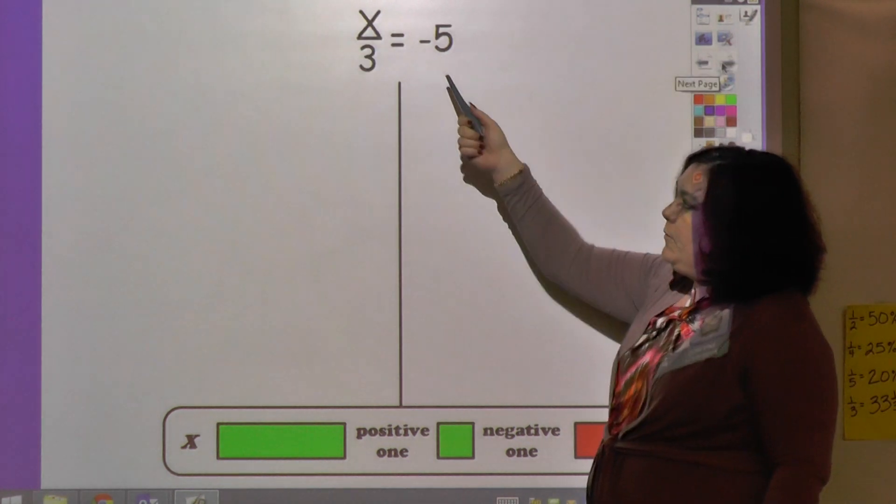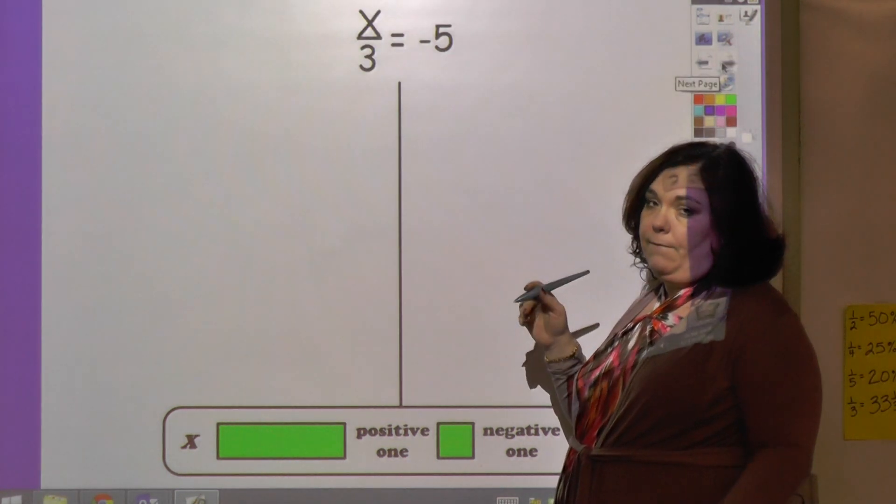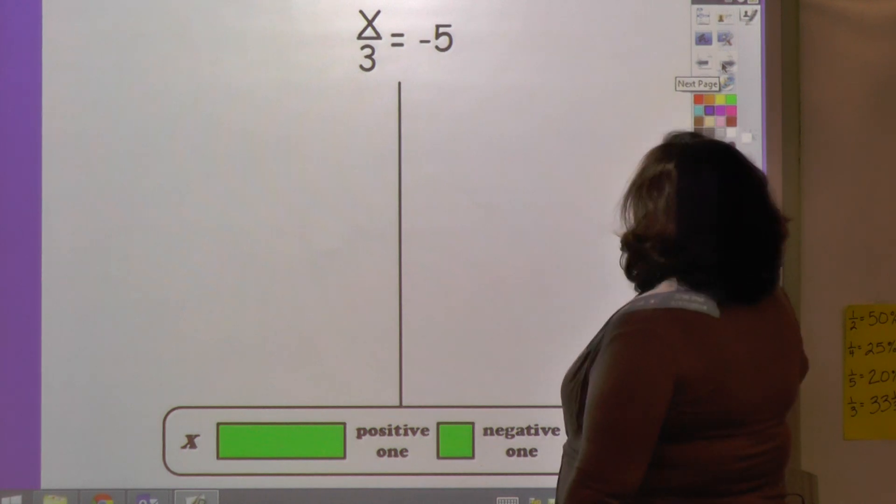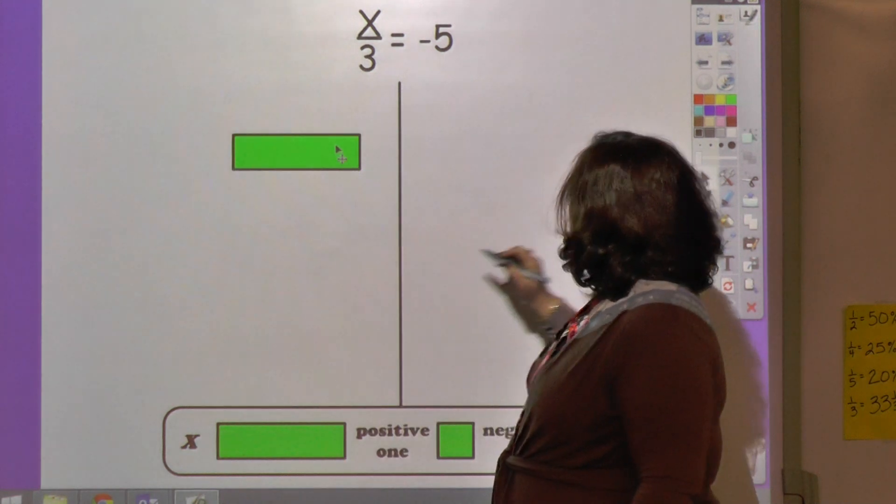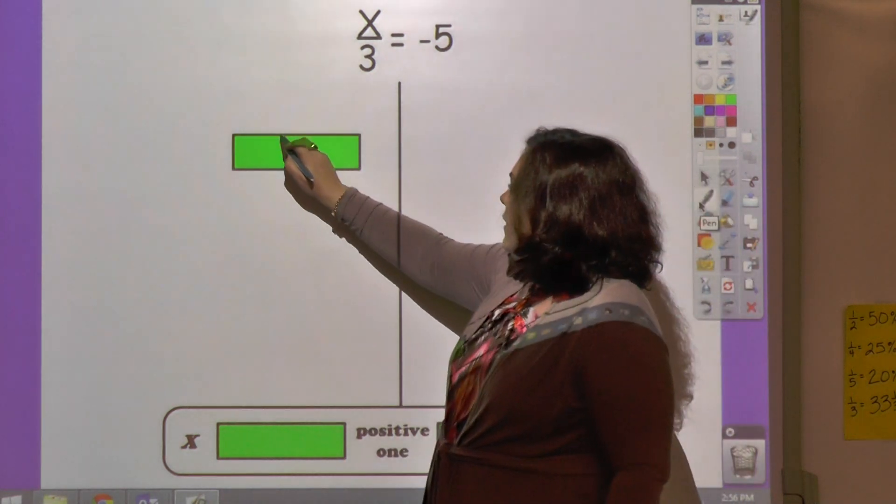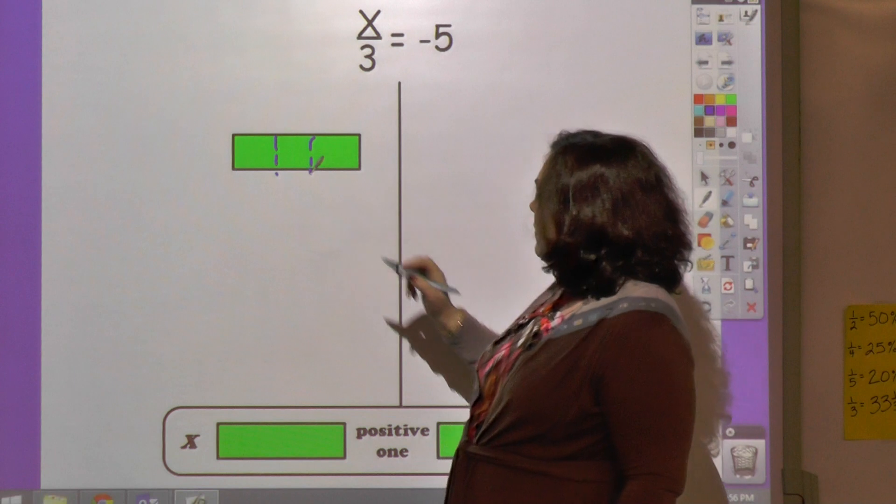This is just representing x divided by 3 in a different way: x over 3. So let's take an x, and we want to show divided by 3. So that's divided by 3.